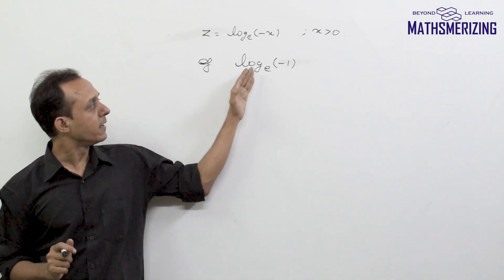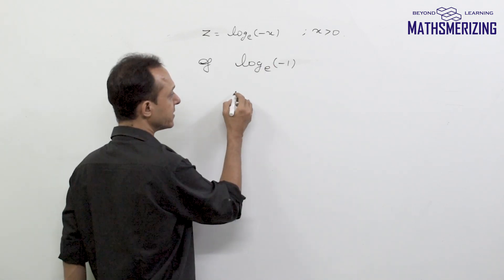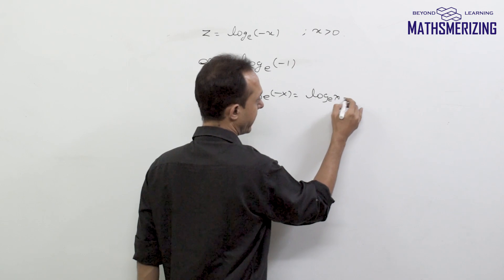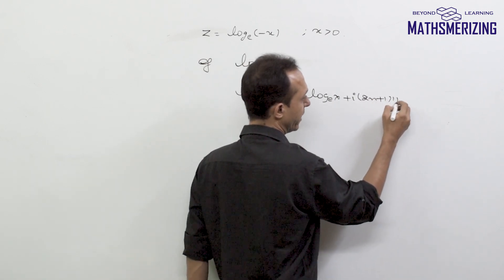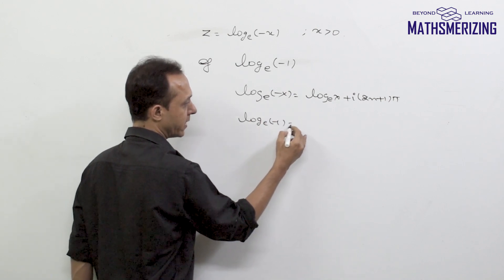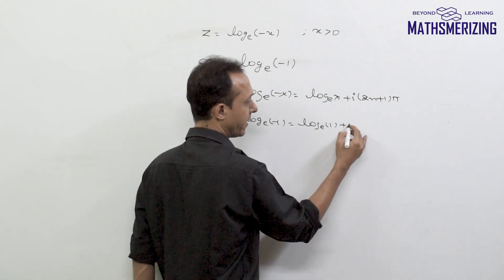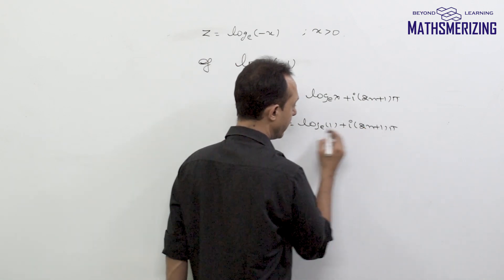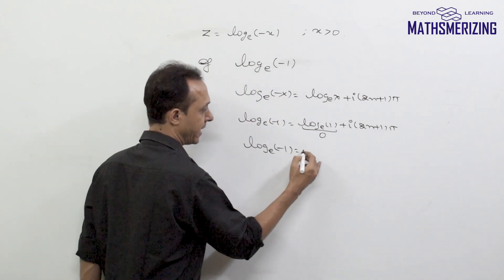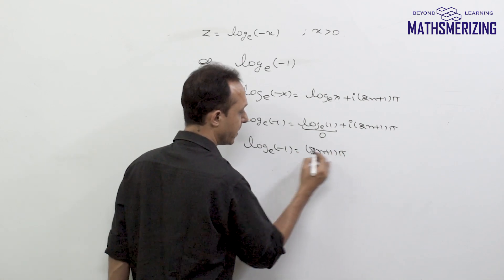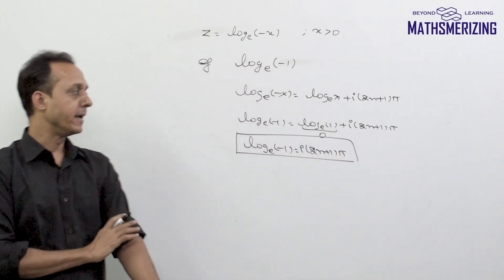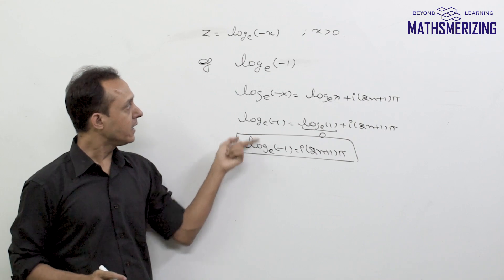Now say for example I have to find the log of minus 1 so either I can use the direct result which is log of minus x is simply log x plus i*(2n + 1)*pi and in this case the value of x is 1 so I'll write log of minus 1 as log 1 and then i will be (2n + 1)*pi. Now we know that log 1 is 0 so I can simply say log of minus 1 will be (2n + 1)*pi*i so that is the value of log of minus 1 so we can find logarithm for any negative real numbers.